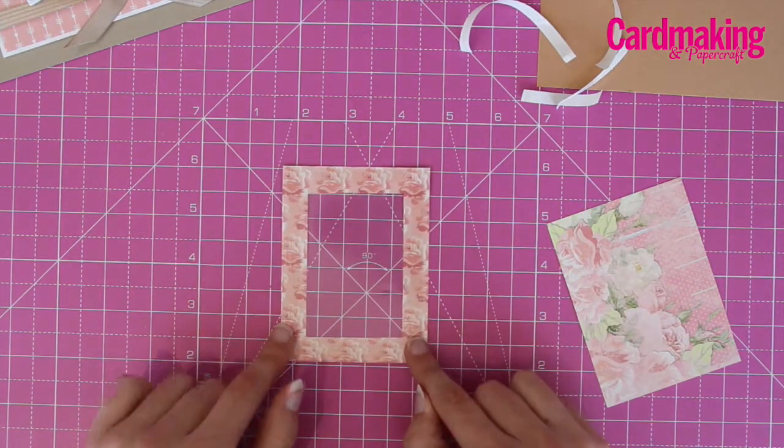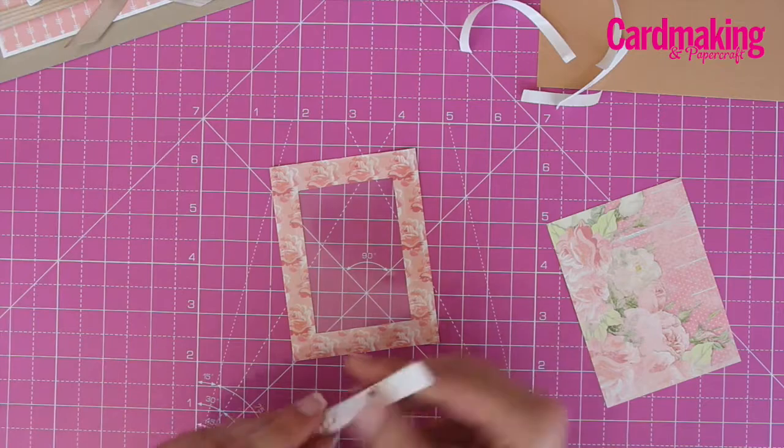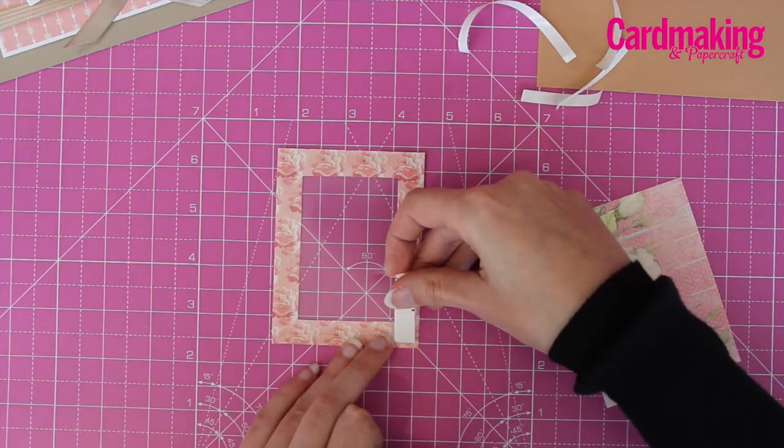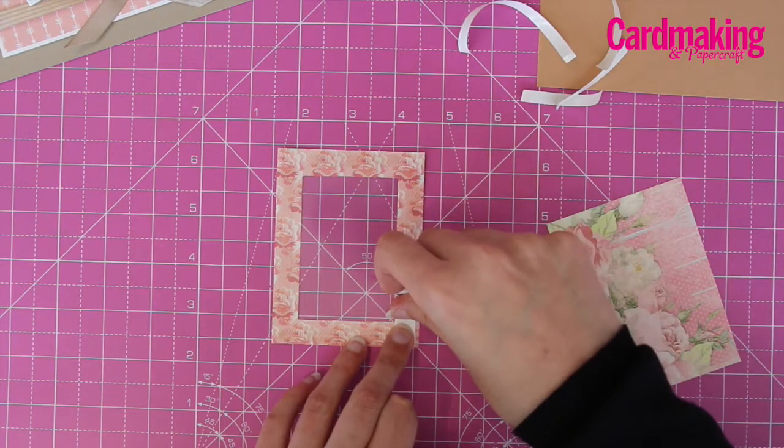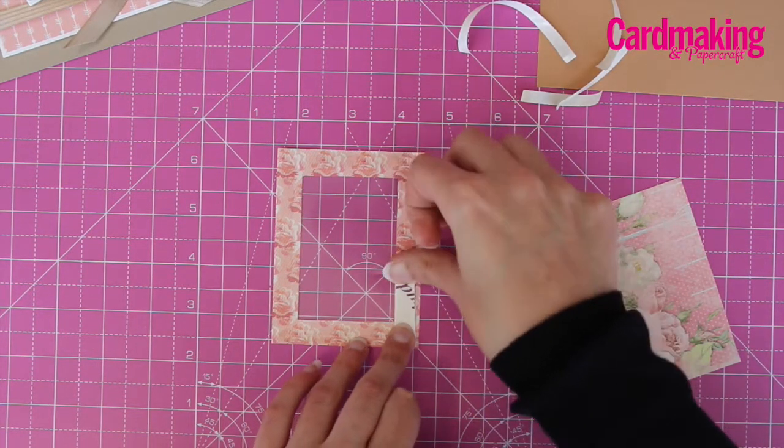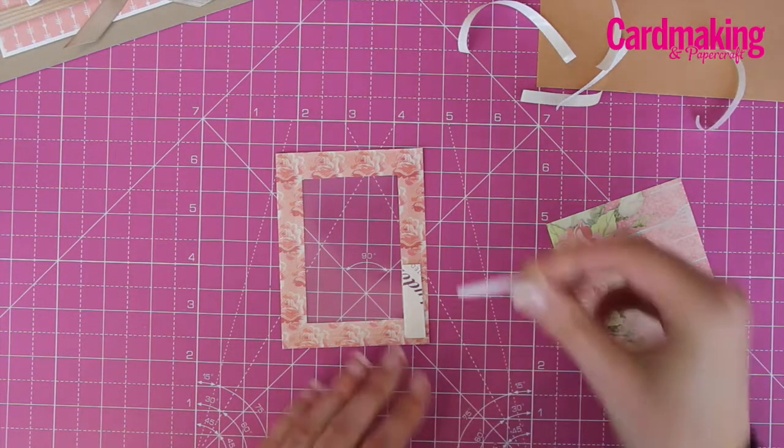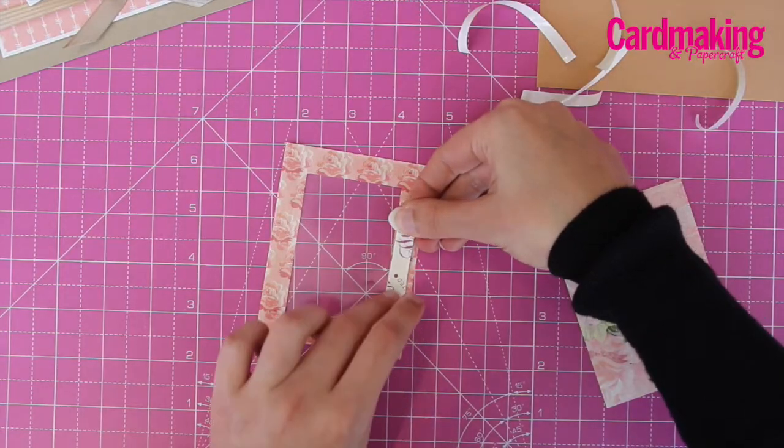With the frame face down on your surface, attach some foam tape or sticky fixers all the way around the edge. It's quite important to use foam tape or larger sticky fixers for this because you want to avoid any gaps.